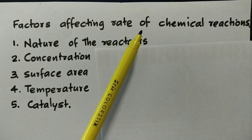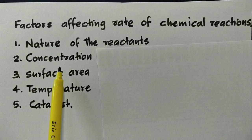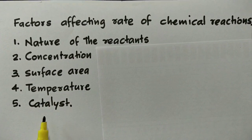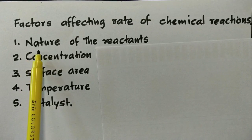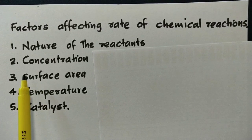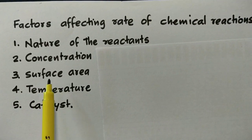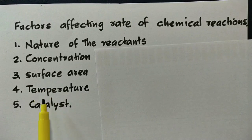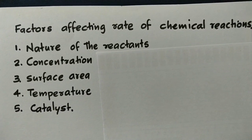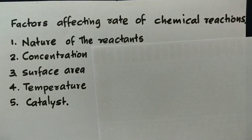The factors that affect the rate of a reaction are: nature of the reactant, concentration, surface area, temperature, and catalyst. In this video class, we have covered nature of the reactant and concentration. Surface area, temperature, and catalyst will be covered in the next video class.